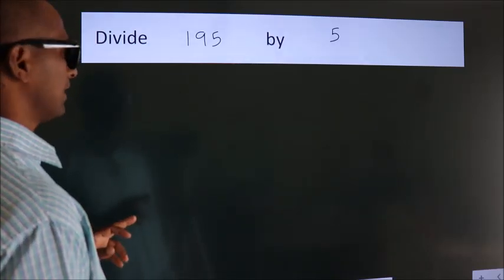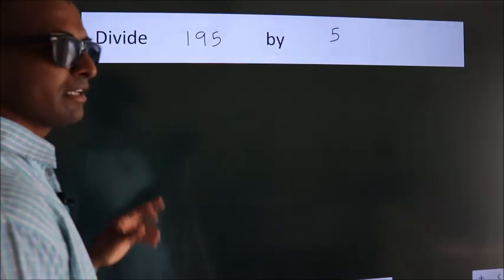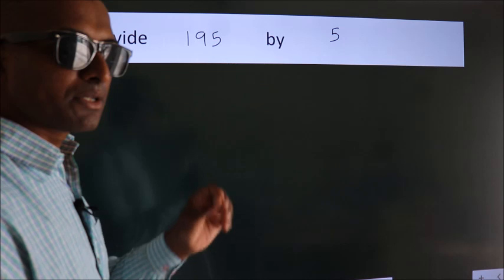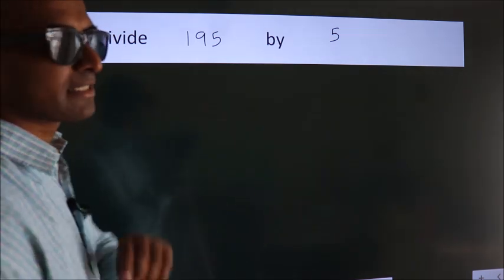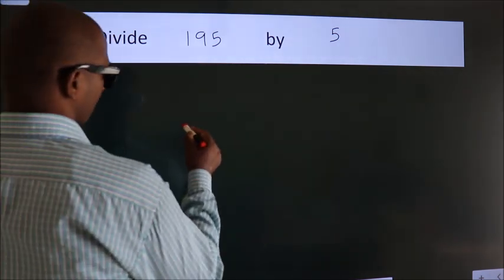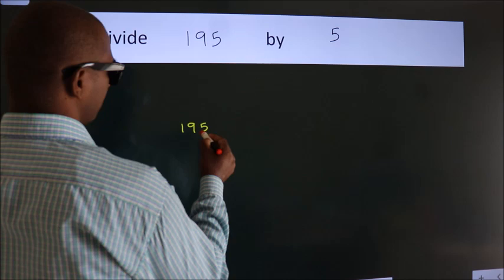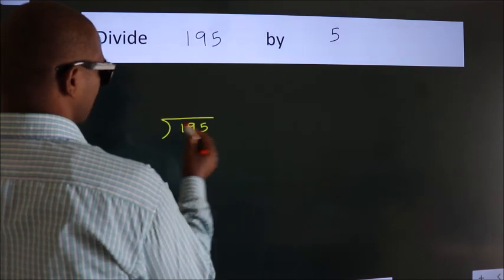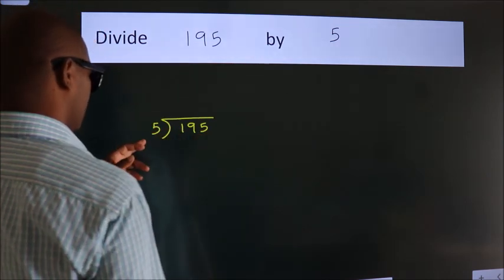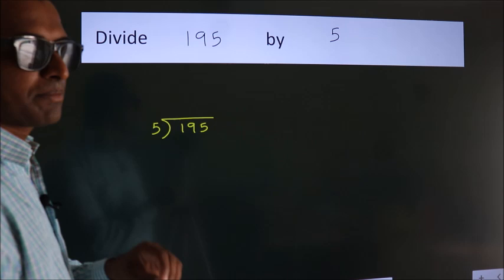Divide 195 by 5. To do this division, we should frame it in this way. 195 here, 5 here. This is your step 1.